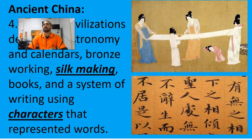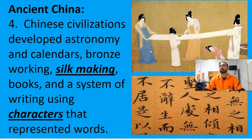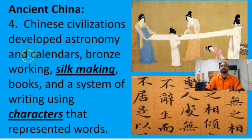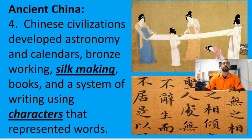Ancient Chinese civilization developed astronomy, calendars, bronze working, and silk making. Silk is made from silkworms — the web of the worm, kind of like a spider web, is spun and woven into beautiful soft silky fabrics. They also developed books and a system of writing using characters that represented words with a single character or symbol.